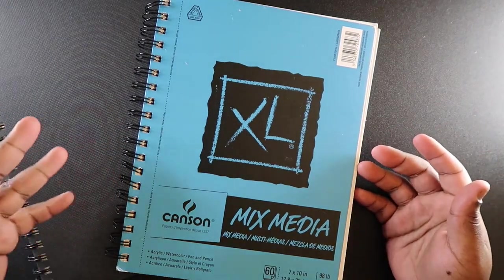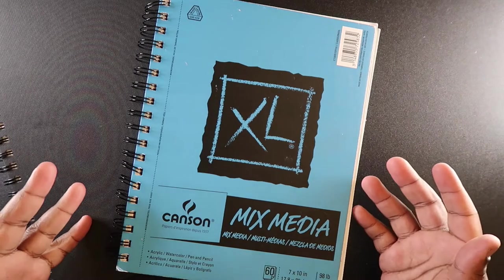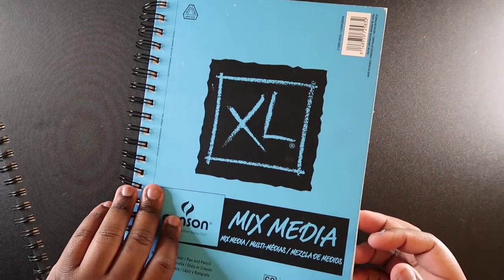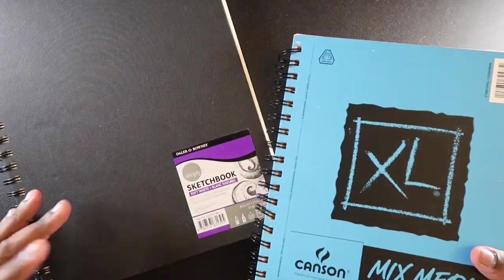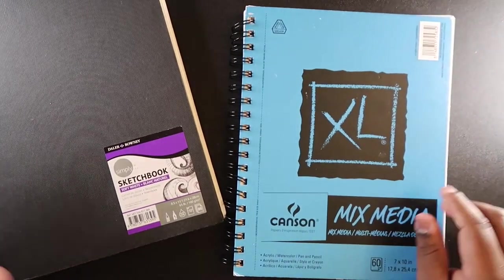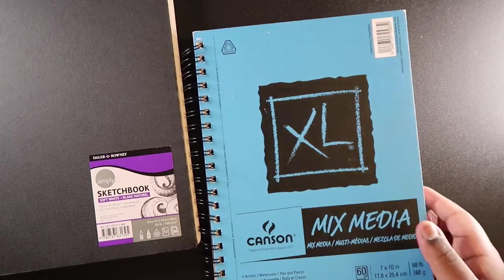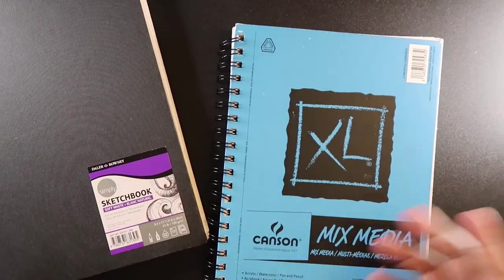But I also like using Canson mixed media paper. This paper is actually good for using markers as well, but I normally use it for sketching because it's got a really nice tooth to it and a nice amount of texture, so I can draw on it no problem. If I do end up getting a cheap sketchbook, I'll be completely satisfied, but I also like Canson mixed media paper. Either one would work for me, it doesn't really matter.